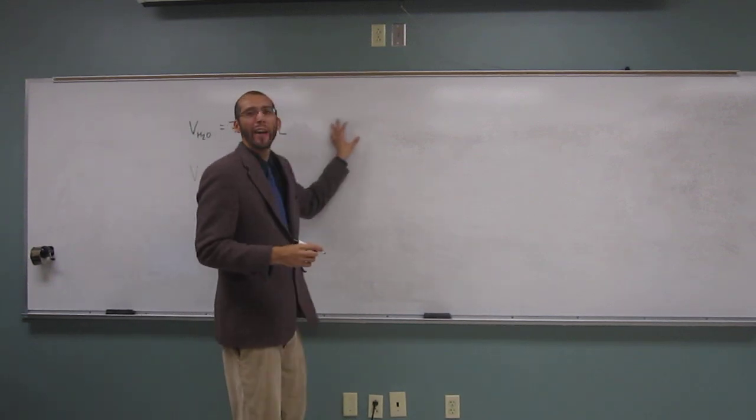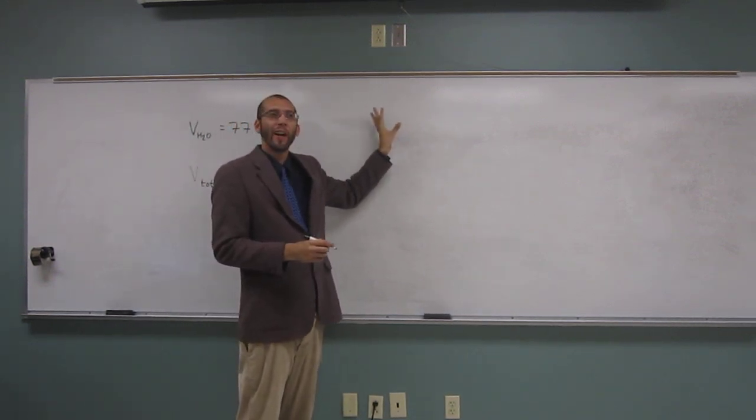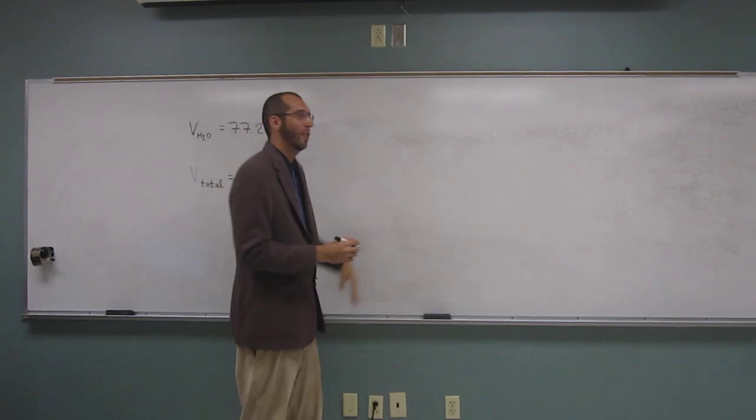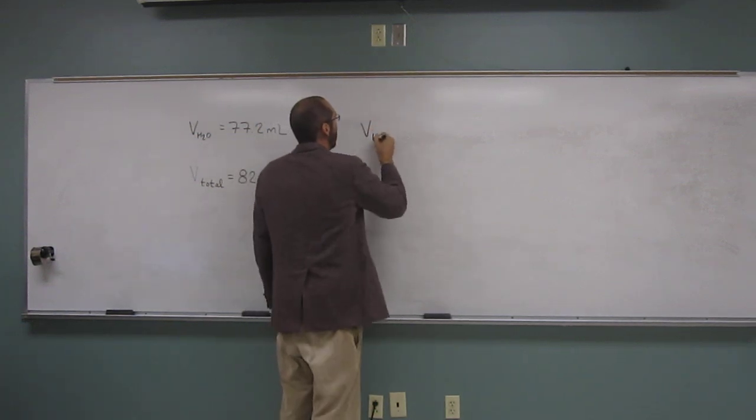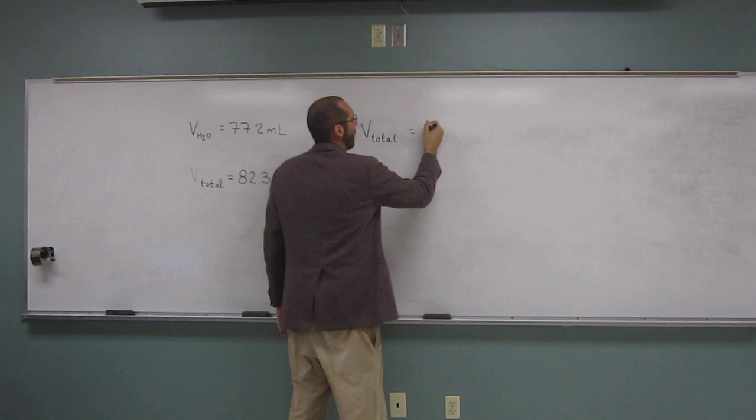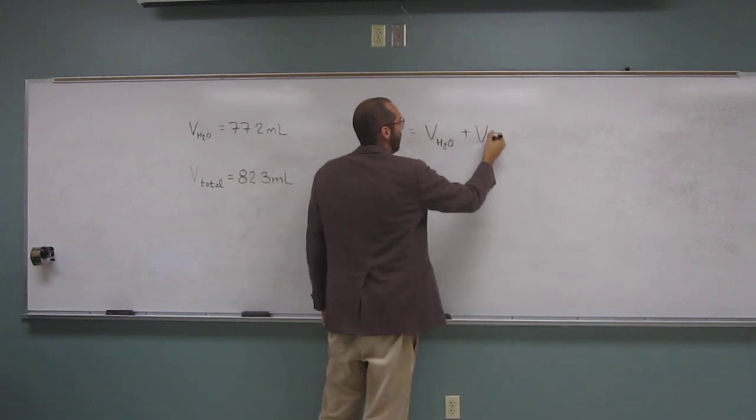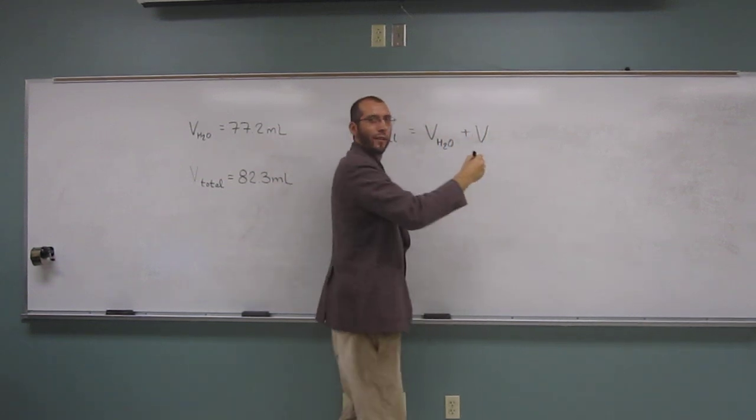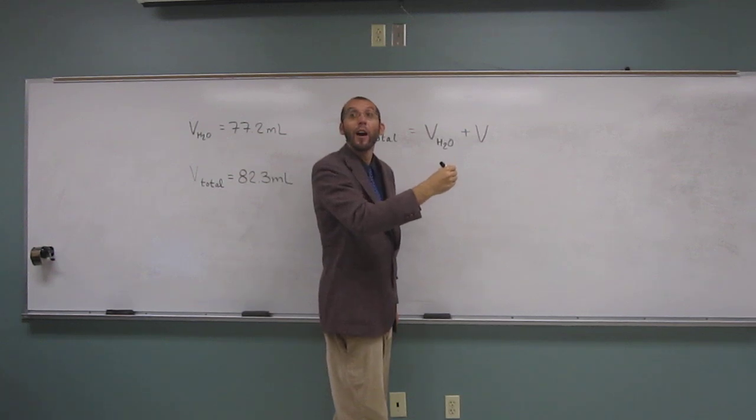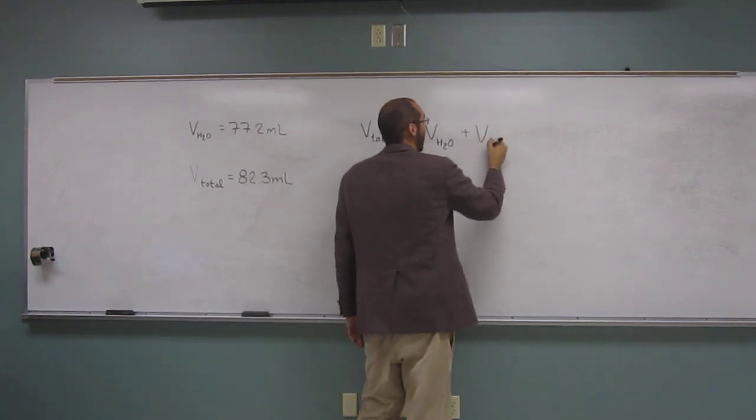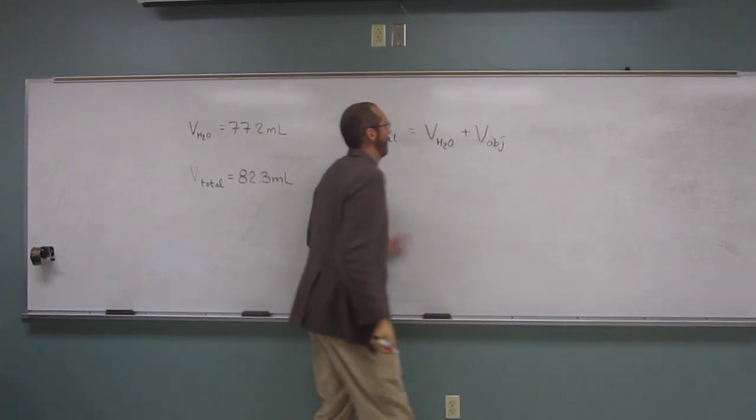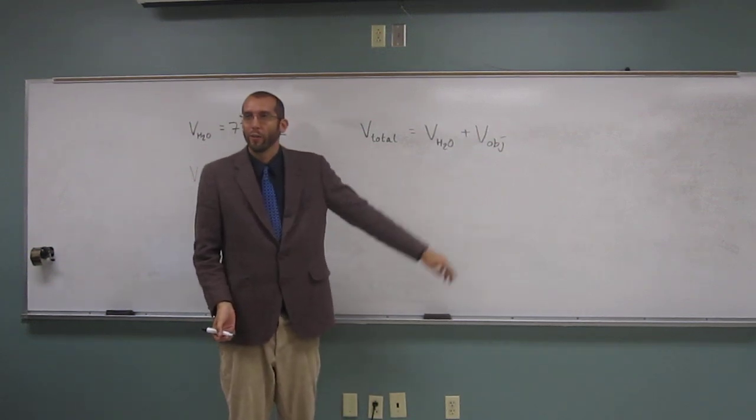Here, let's just write out the equation of how do we figure out what the volume of the irregular object is. So the volume total is going to equal what? The volume of what? Water plus the volume of what? Total. The volume of the object, right?